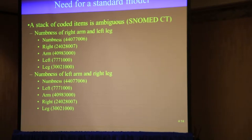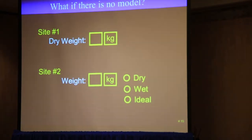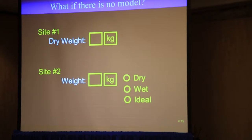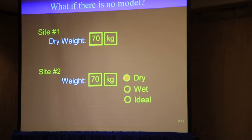If we take a slightly different example and talk about weight representation — weight, you would think, would be one of the easier things to describe. You could have one site saying they've got a dry weight of 70 kilograms, another one saying they've got a weight of 70, and then there's a second data collection piece that says that's a dry weight.